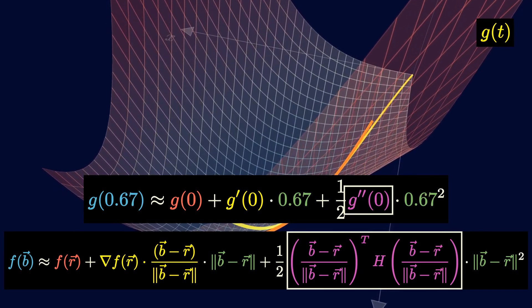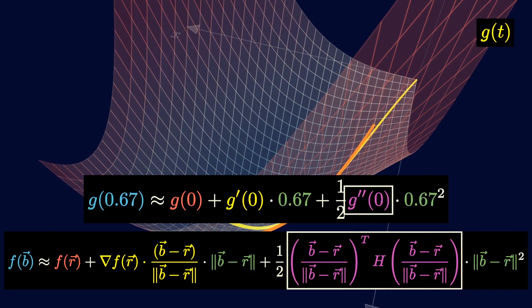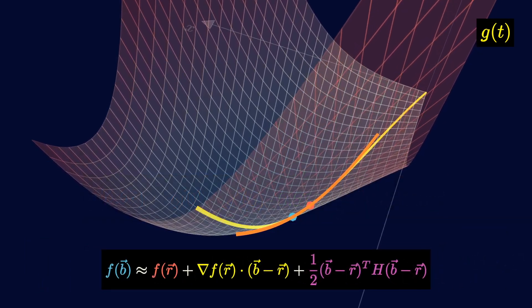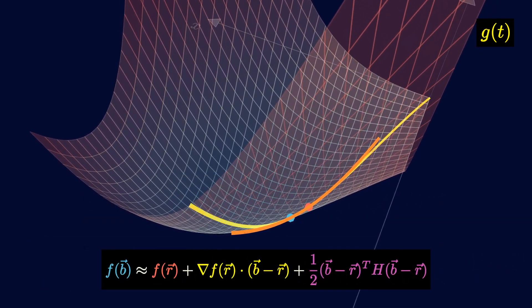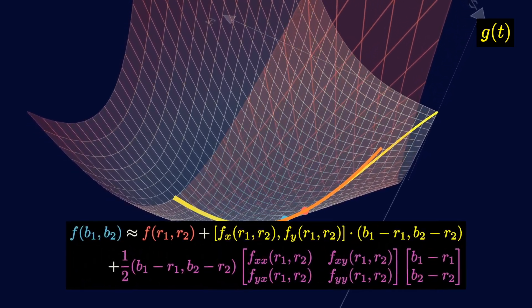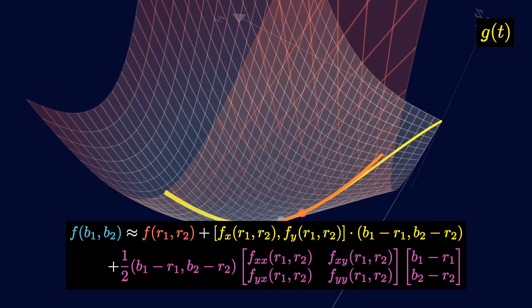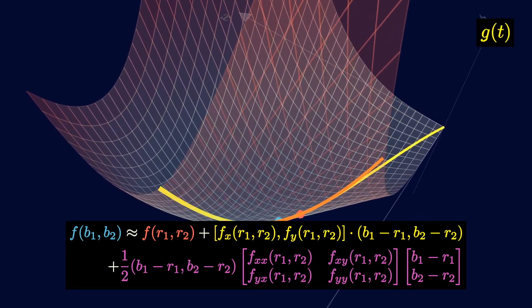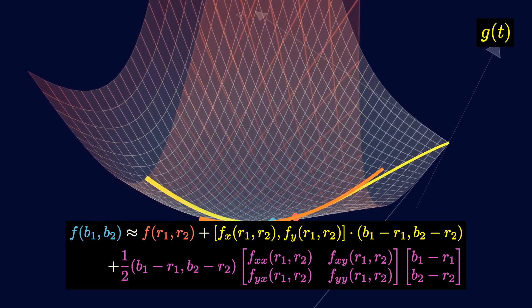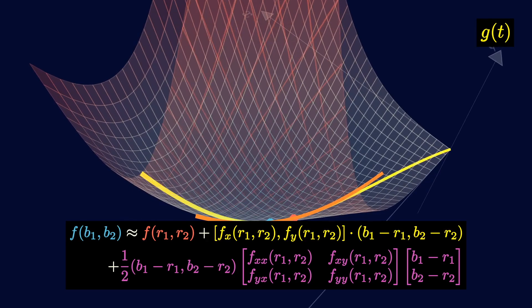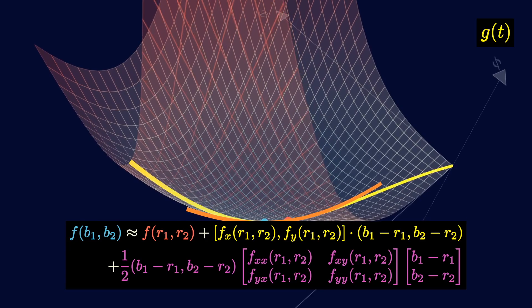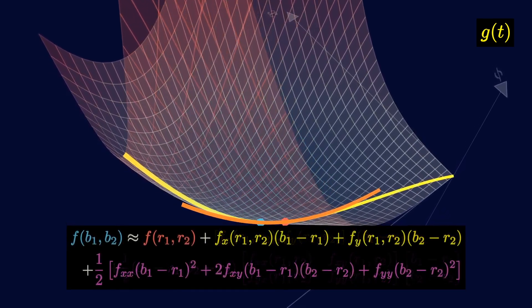These distances cancel. This is the second order Taylor polynomial written in matrix form. We can also write out the gradient and the Hessian. Note that fxx, fxy, and fyy are the partial second derivatives. When the second order partial derivatives are continuous, then fxy is equal to fyx. If we assume this with some more algebra, the Taylor polynomial turns into this.